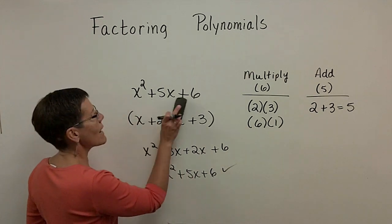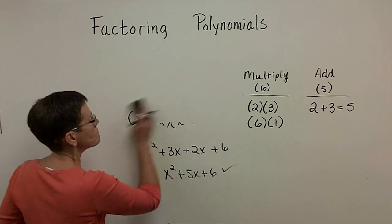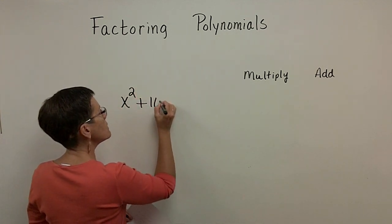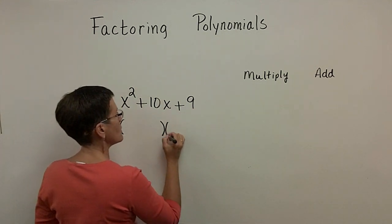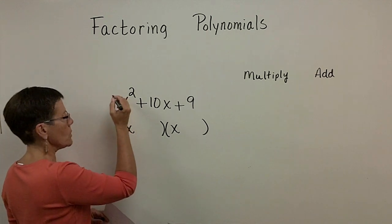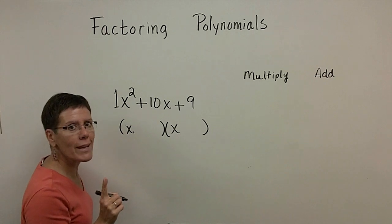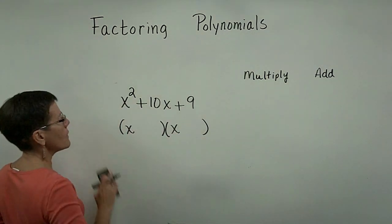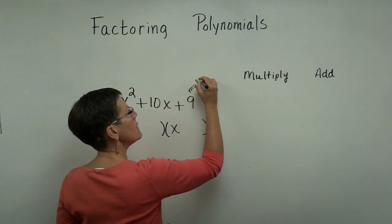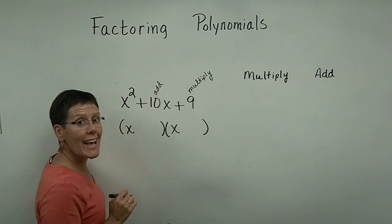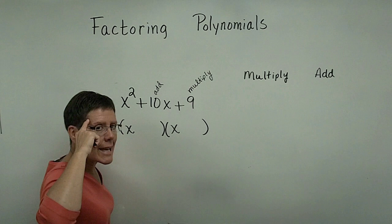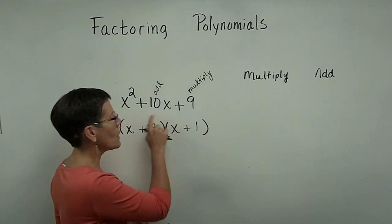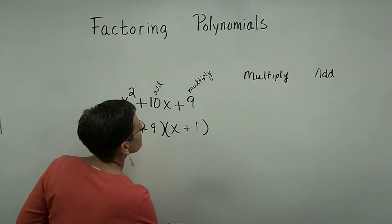Let's do a few more as we change the signs in the trinomial. Take x squared plus 10x plus 9. I'm factoring into the product of two binomials — since there's a 1 in front of x squared, both binomials start with x. I need two numbers that multiply to be 9 and add to be 10. 3 times 3 doesn't add to 10, so I use 9 and 1: their product is 9 and they add to 10. Then foil to check.